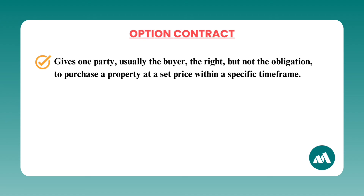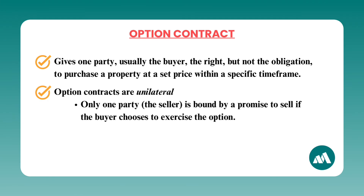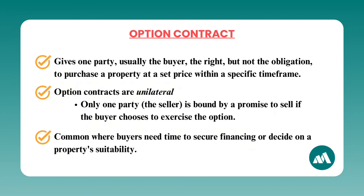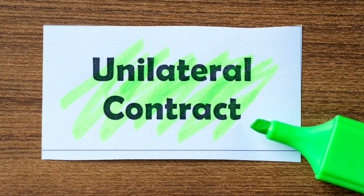Number ten: option contracts. An option contract gives one party — usually the buyer — the right but not the obligation to purchase a property at a set price within a specific time frame. Option contracts are unilateral, meaning only one party — the seller — is bound by a promise to sell if the buyer chooses to exercise the option. These contracts are common in scenarios where buyers need time to secure financing or decide on a property's suitability. Don't forget the word unilateral associated with option contracts, as it may show up in the answers.